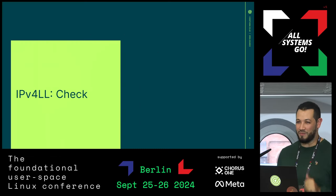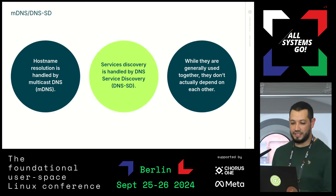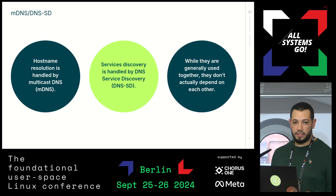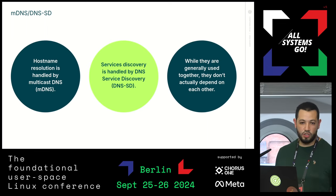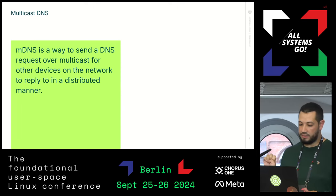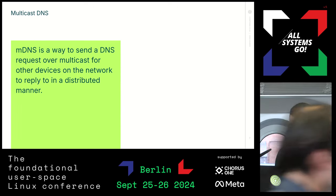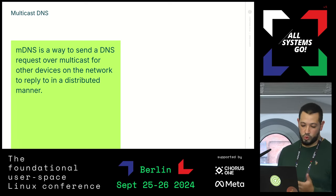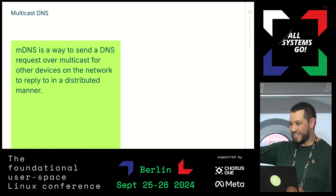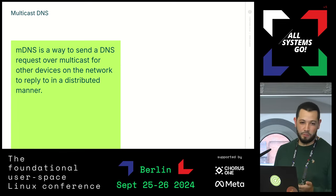Next up is MDNS and DNS-SD. MDNS, or multicast DNS, is what is used to handle hostname resolution, and service discovery is handled by DNS-SD, or DNS service discovery. They are generally used together as part of zero-conf, but each can be used independently. MDNS is a way to send DNS requests over a multicast socket to other devices on the network so they can reply in a distributed manner — each device can reply saying 'that's me' — rather than having a central DNS service.